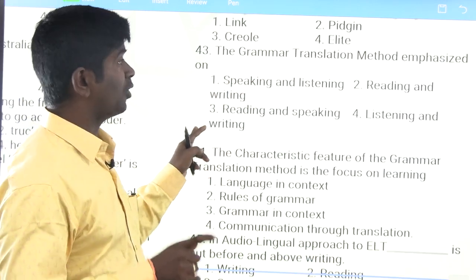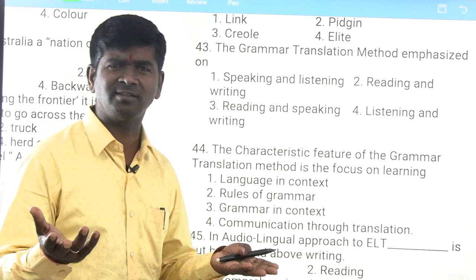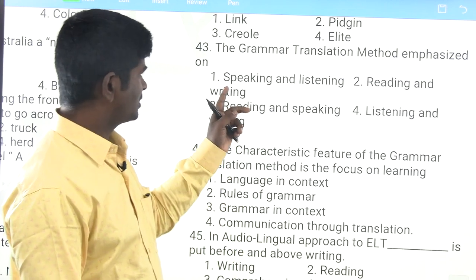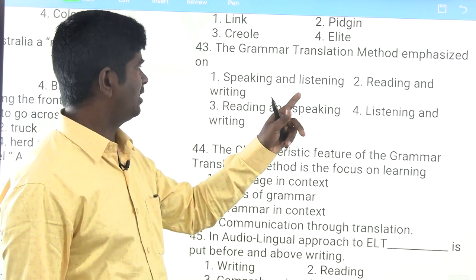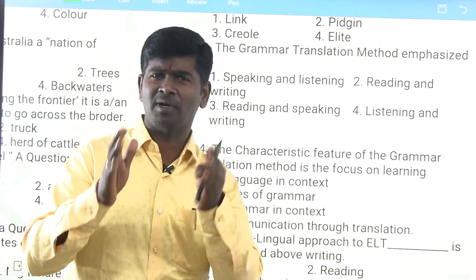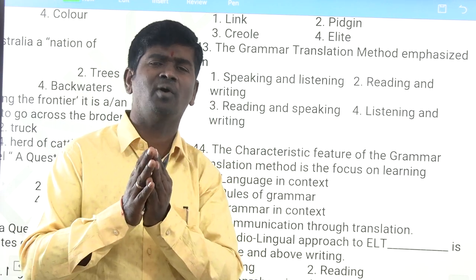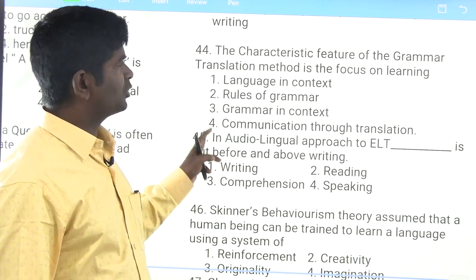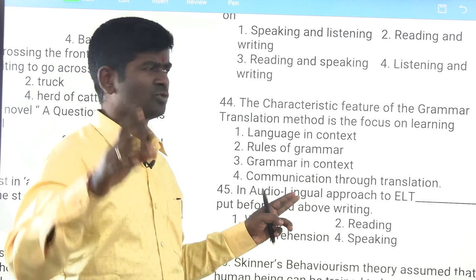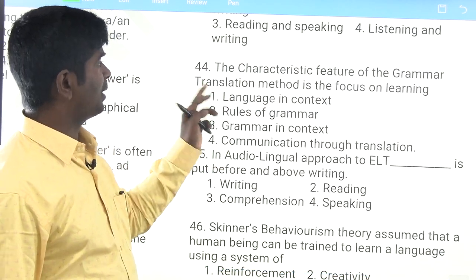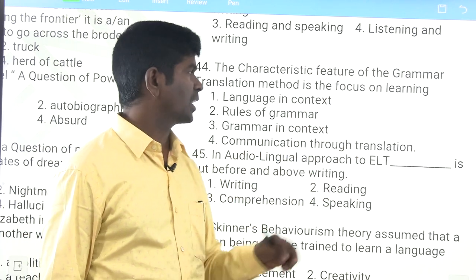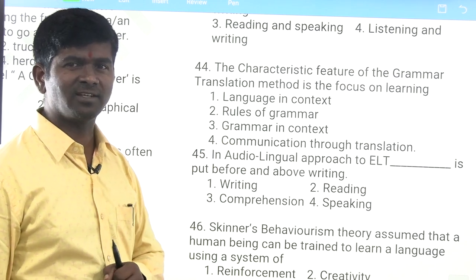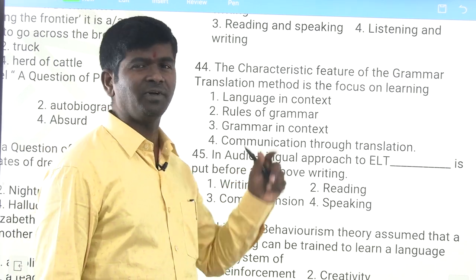The grammar translation method emphasized reading and writing. It is the oldest method, popular from 1850 to 1900. Speaking and listening were not prioritized — the answer is reading and writing. The characteristic feature of grammar translation method is focus on rules of grammar. Options include: language in context, rules of grammar, grammar in context, and communication through translation. The answer is rules of grammar — learners learn many rules but sometimes do not know how to use them in practical life.